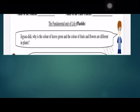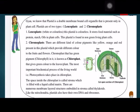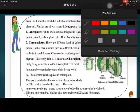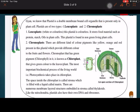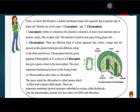You can see from the pictures that there are different leaves shown having different colors. All of this is because of plastids. So, what are plastids? Plastids are actually a double membrane-bound structure.